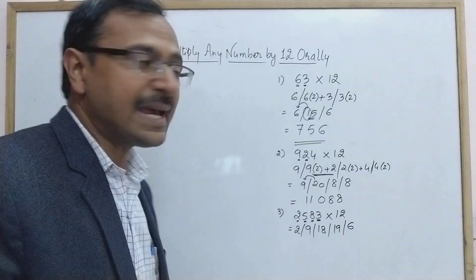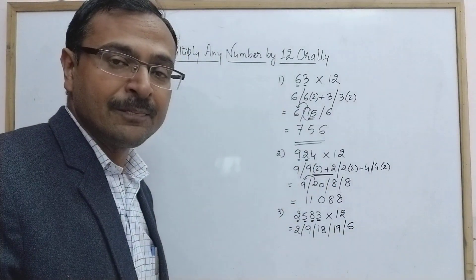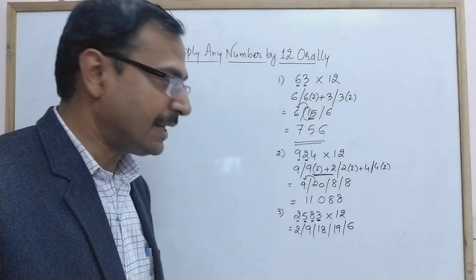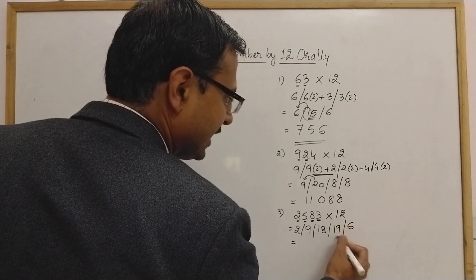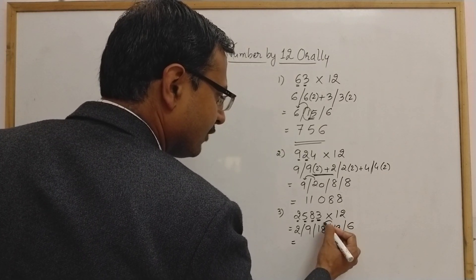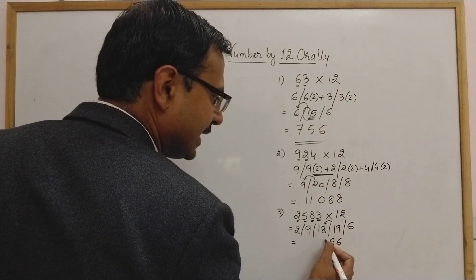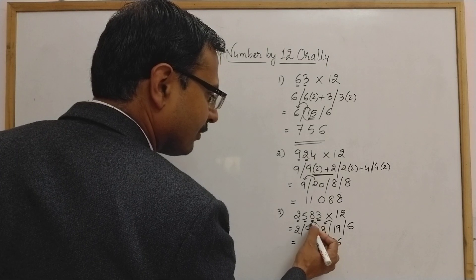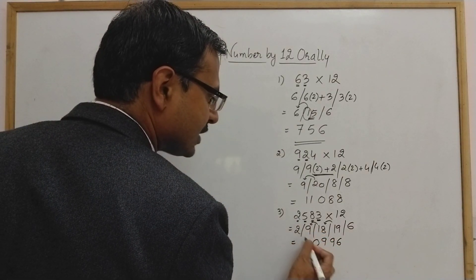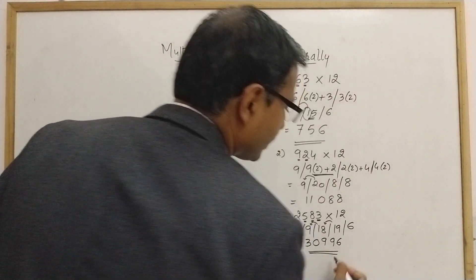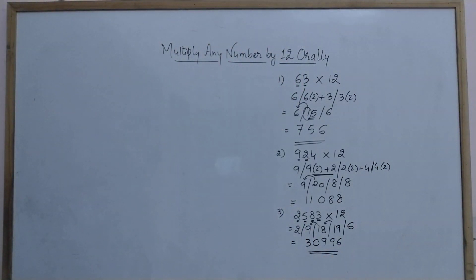We skip intermediate steps as we progress to save time. So: 6, then 19 means 9 retained and 1 carried forward; 18 + 1 = 19, again 9 retained and 1 carried forward; 9 + 1 = 10, means 0 and 1 carried forward; 2 + 1 = 3. So the answer is 30996.